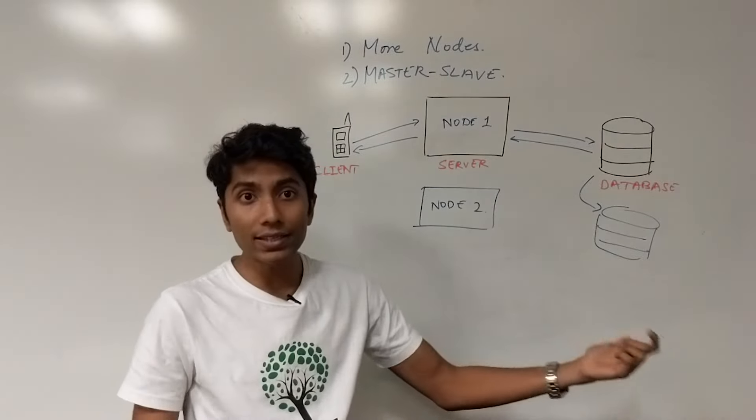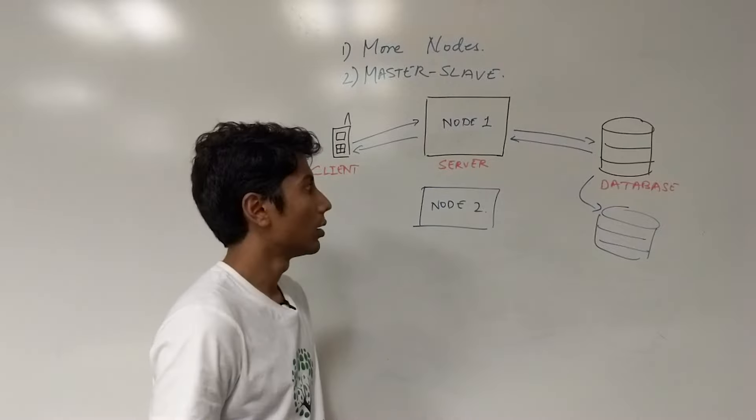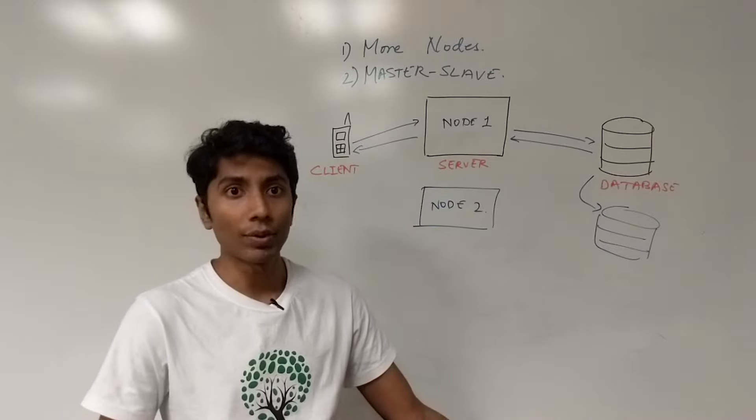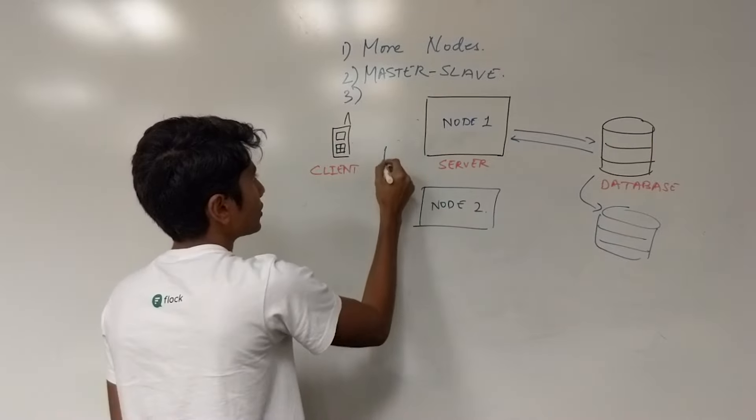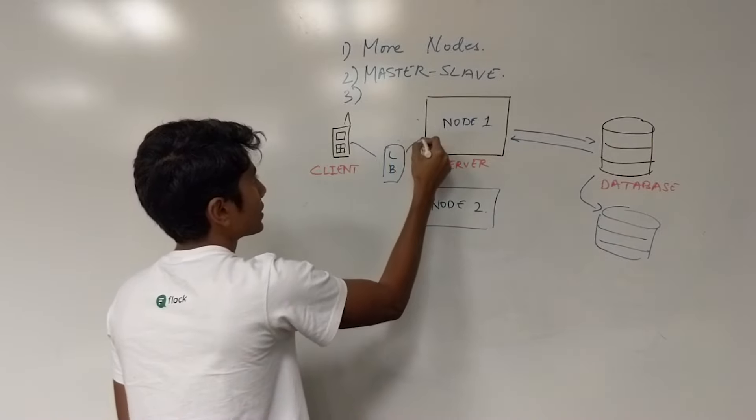Some of these slaves might be read slaves. You can read from them. Some of them may not be. In fact, maybe you want perfect consistency. So that's fine. Some sort of a load balancer to tell you where to send these requests.